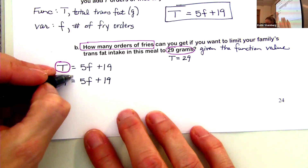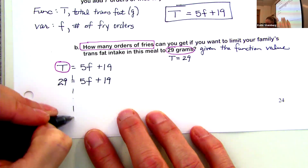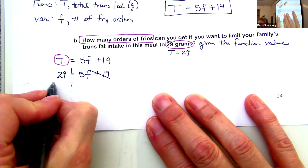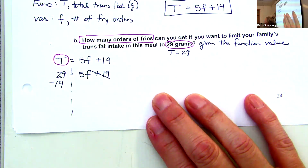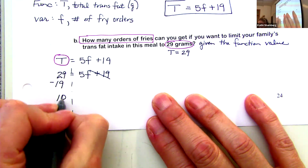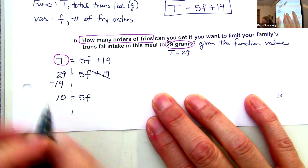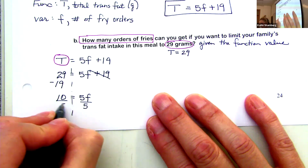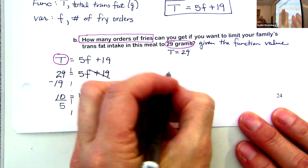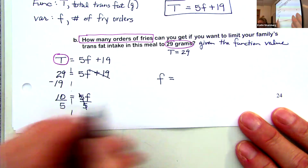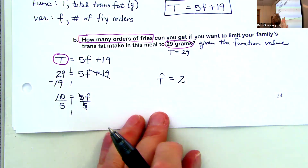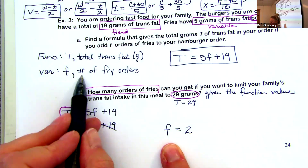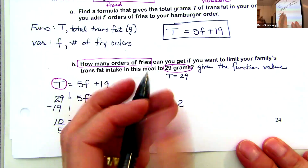I want to get F by itself. I first get rid of the plus 19 by subtracting: 29 minus 19 is 10. Then 5F means 5 times F, so I undo multiplication by dividing by 5. F equals 10 divided by 5 is 2. And you have to say two what? Two orders of fries — not two grams of trans fat. F is number of fry orders.